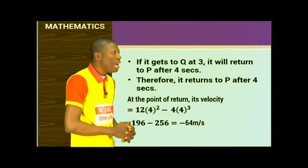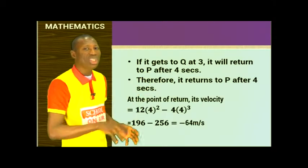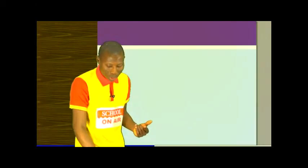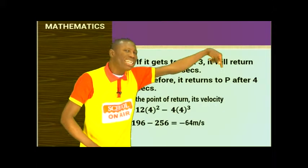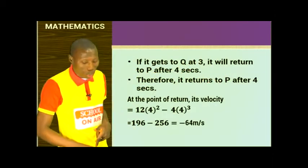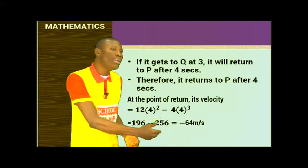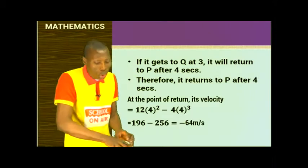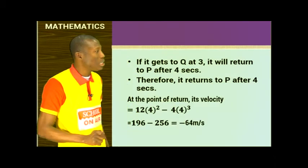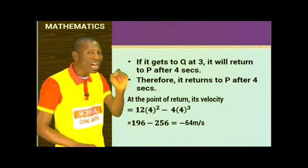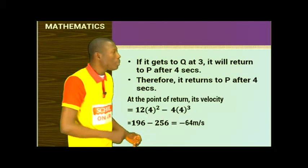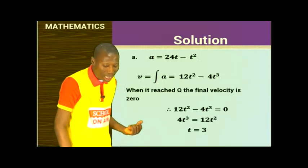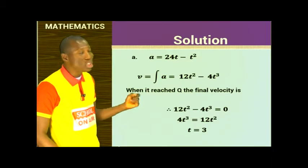If it reaches the turning point at t equals 3 seconds, it will return to P after twice that time — after 4 seconds. This is the key aspect of this question. When the body moves from P to the turning point, it travels forward, then comes back. So the body returns to P after 4 seconds. At that point, velocity equals 12(4)² minus 4(4)³.